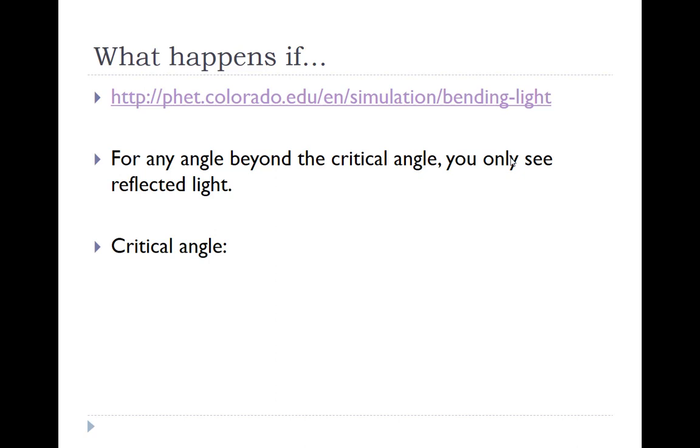What happens if when we go from high index to low index? Then we saw that the light refracted away from the normal, and there was this angle where you no longer got refracted light. That angle is known as the critical angle, and for any angle beyond the critical angle, you only have reflected light.